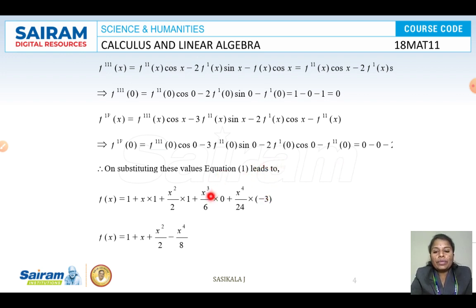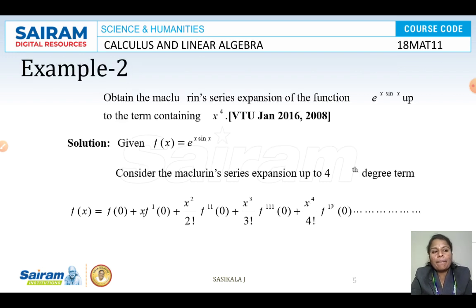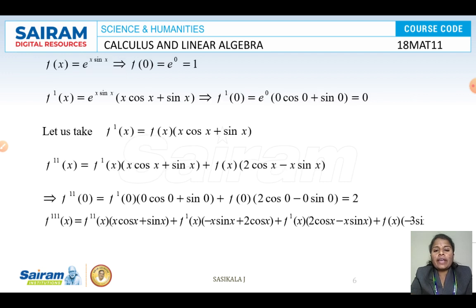Substituting these values into the Maclaurin series, the expansion of F(x) = e^(sin x) is: 1 + x + x²/2 − x⁴/8. Now for the next example: obtain the Maclaurin series expansion of e^x · sin x up to the term containing x⁴. Here F(x) = e^x · sin x, which is a product.